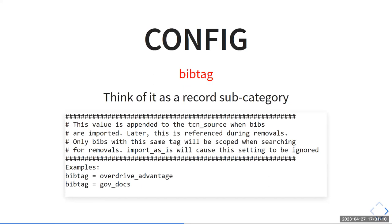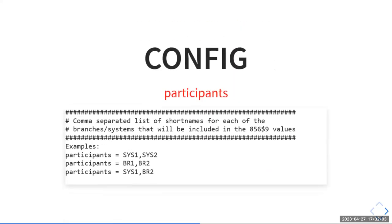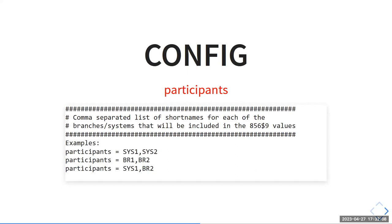Another part of the config is bib tag — think of this as a record subcategory. You've got your big category like 'electronic', and then a tag for more granular naming conventions, like 'overdrive advantage' or 'gov docs'. There's also a config that should always be set to yes — it's disabled if you're importing records you originally exported from Evergreen, in which case you'd set it to no because they wouldn't need TCN authority assignment. Then there's participants: a comma-separated list of short names for all your branches or participating systems.